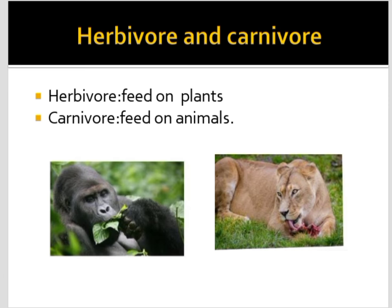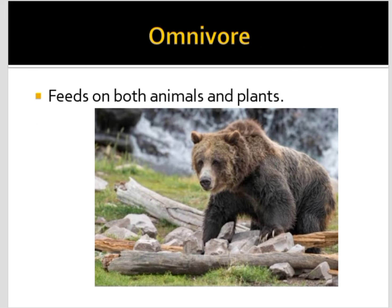Herbivores feed on plants, and carnivores feed on animals — for example, tigers and elephants. Omnivores feed on both animals and plants; human beings and bears are examples of omnivores. They depend on both plants as well as animals.